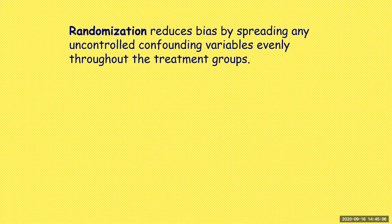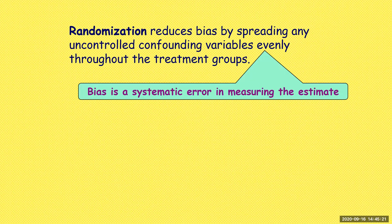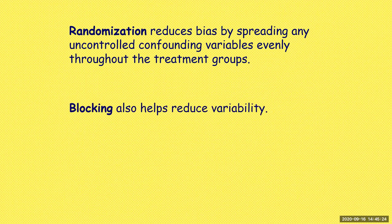Just as with simple random sampling, our goal is to eliminate as much bias as possible. There will always be some error, but we minimize what we can control. Bias is a systematic error in measuring the estimate. Blocking also helps reduce variability — that's the whole point of blocking. If we think we'll get different results from males and females, we should separate and get results for each group, which shortens the range of data for each section.